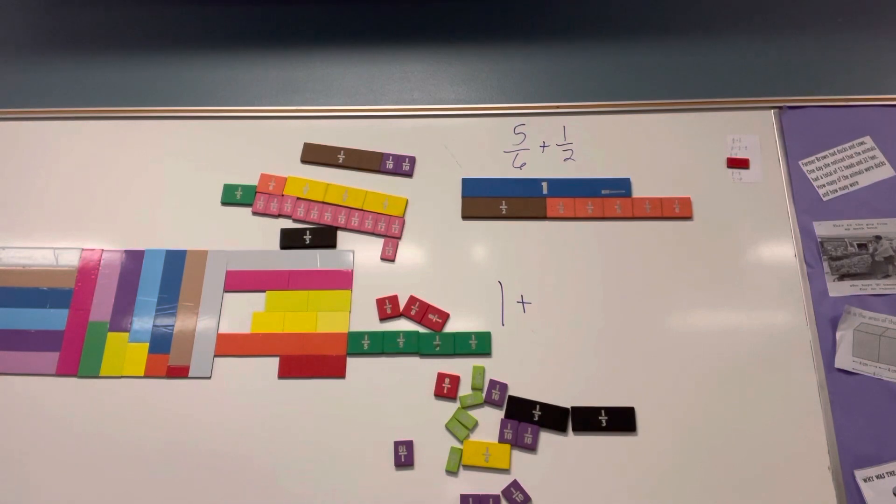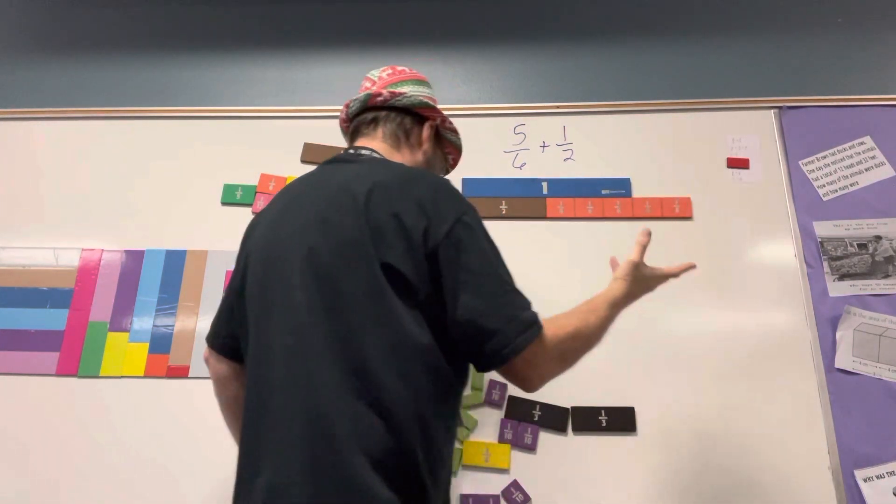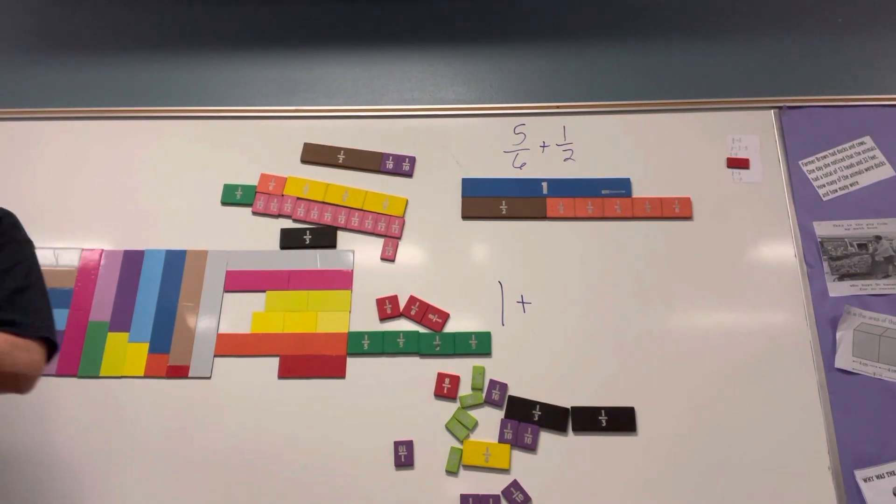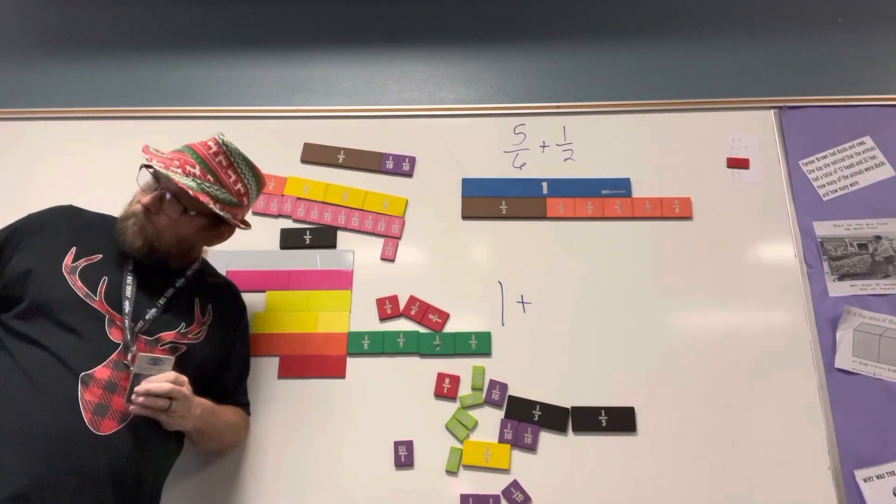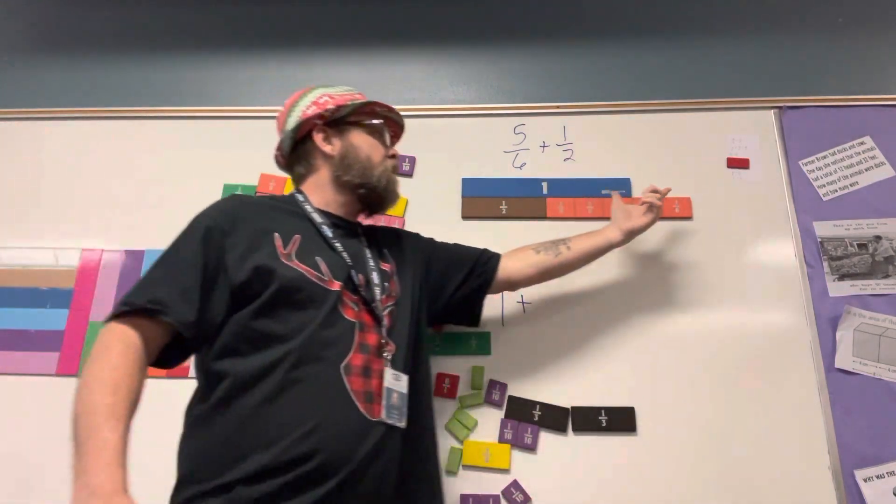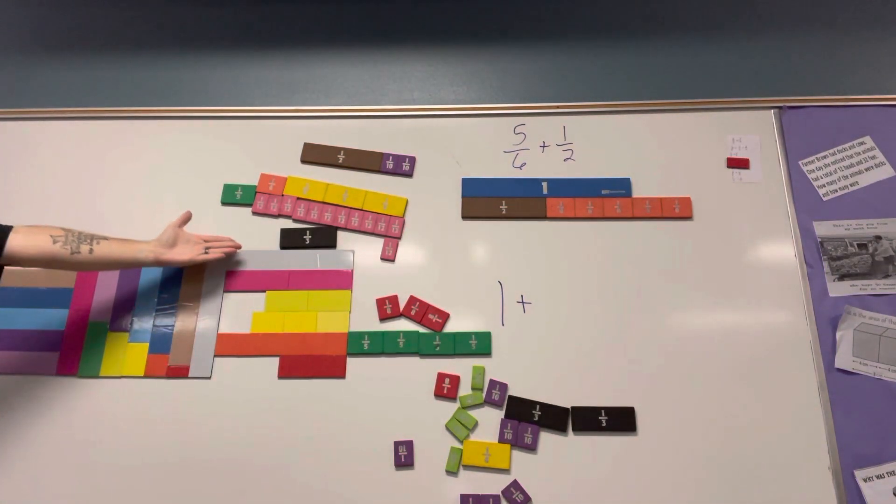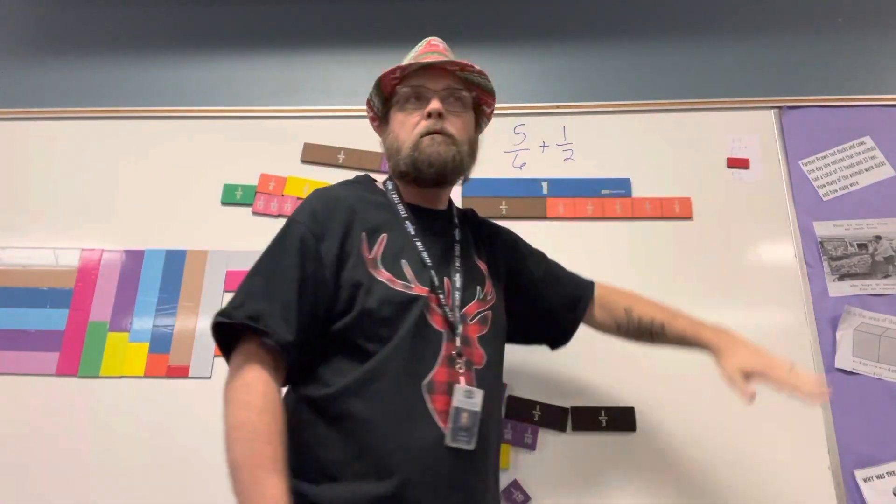Really all I need to do is find the fewest number of pieces that would fit here. So this is two sixths, so I could put two sixths up there. Is there any other thing I could put up there? What do you think will fit right here? I mean, we obviously know two sixths will fit up there because it fits right above it.